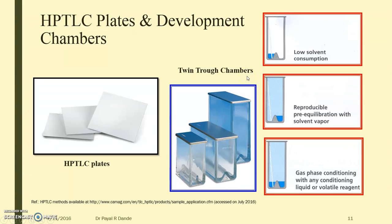The twin trough chamber is more useful and advantageous than other chambers used normally in the lab. First, it allows us to use very less solvent — so there is low solvent consumption. Second, it helps in increasing reproducibility as well as attaining pre-equilibration with the solvent vapor. You can even keep a filter paper inside to make the saturation process quick. Third, gas phase conditioning with any conditioning liquid or volatile reagent is also possible in this twin trough chamber.